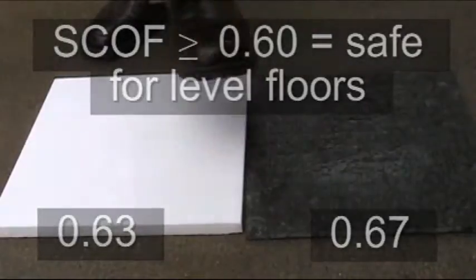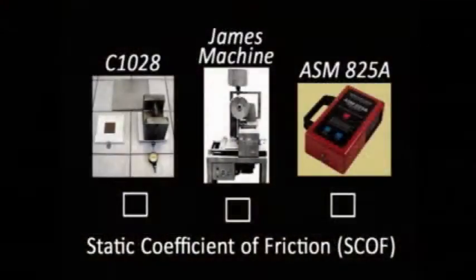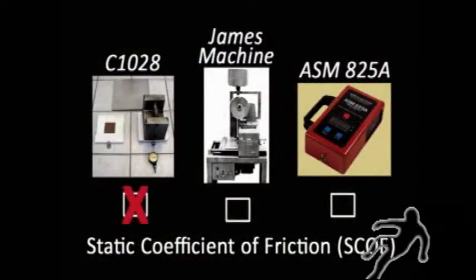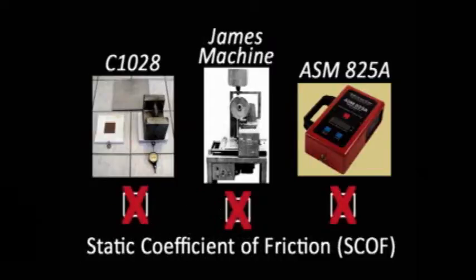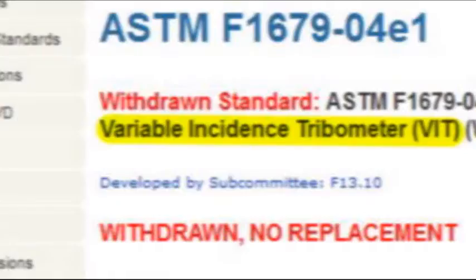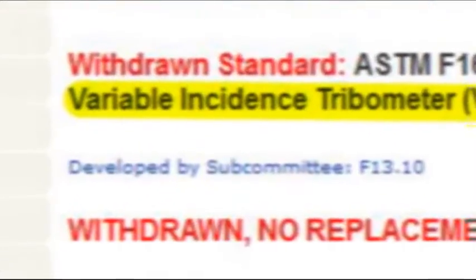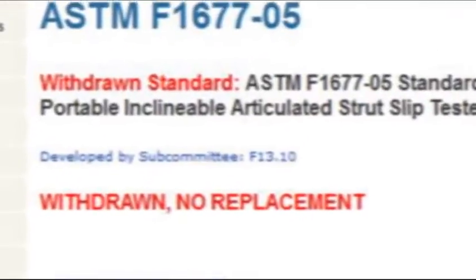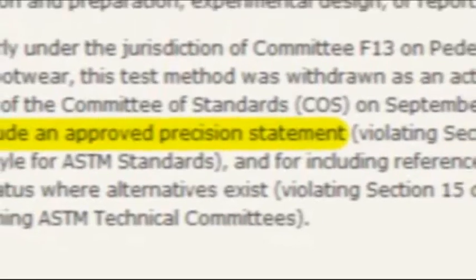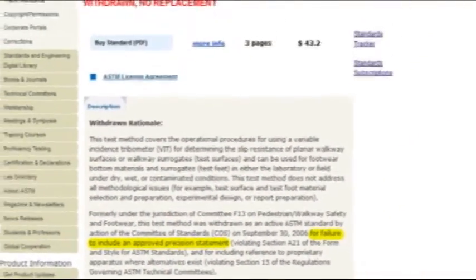All the test methods that measure static coefficient of friction are more often than not completely unreliable and downright misleading. There are a couple of dynamic test methods that are no good as well. The English XL and the Brungraber Mark II both had ASTM test methods at one time, but both were withdrawn for a very important reason: failure to include an approved precision statement.